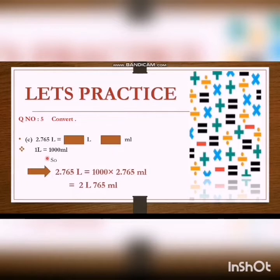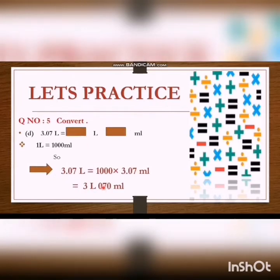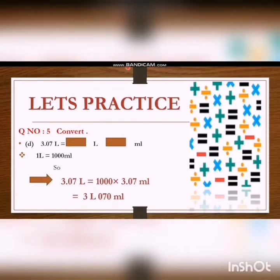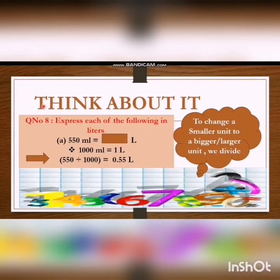Part C: 2.765 liters. We multiply 2.765 by 1000 and we get 2 liters and 765 ml. Part D: 3.07 liters. We change it into liters and milliliters. We know that 1 liter is equal to 1000 ml. When we multiply 3.07 by 1000, we get 3 liters and 070 ml. Remember: to change a smaller unit to a bigger or larger unit, we divide.